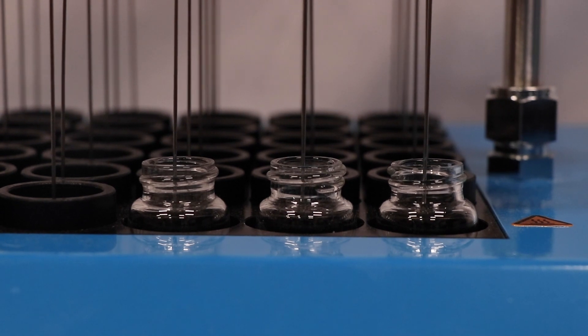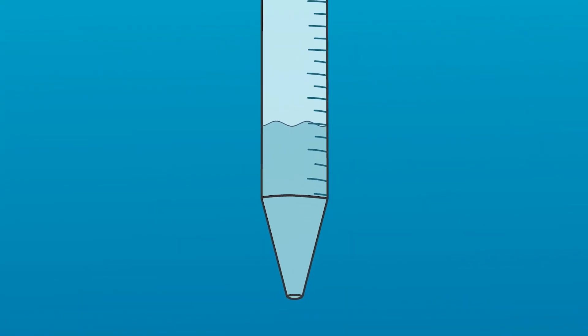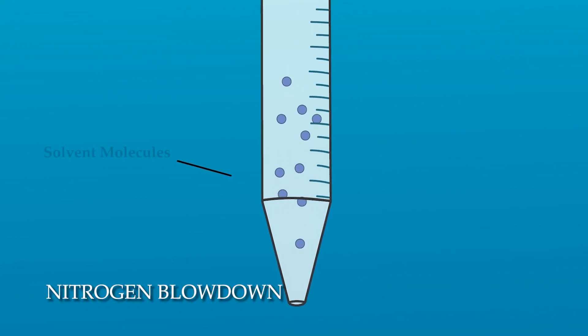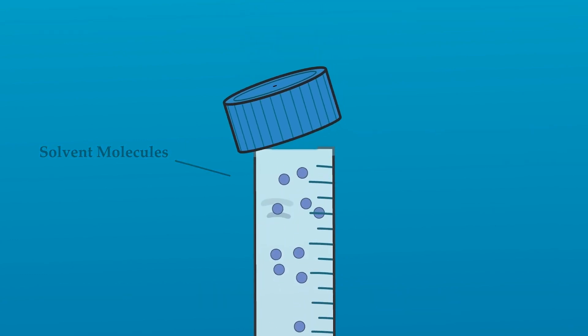Let's begin with nitrogen blowdown evaporation. If we look at a sample under ambient conditions with no external forces, we'll notice that the solvent molecules move around very slowly. Because of this, only some are able to be vaporized and separated from the sample.